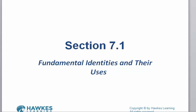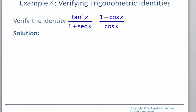We're going to continue section 7.1 and look at a couple of other examples where we're going to verify trigonometric identities. We'll start with the identity tangent squared x divided by 1 plus secant x is equal to 1 minus cosine x divided by cosine x.